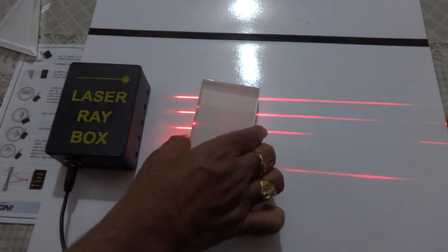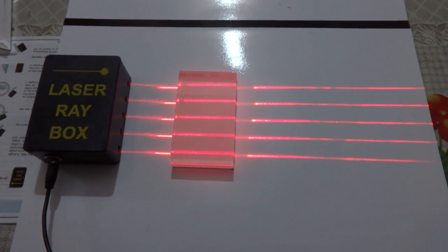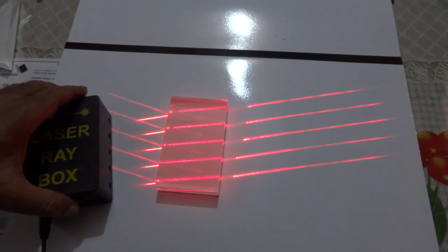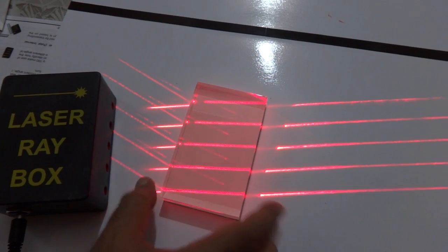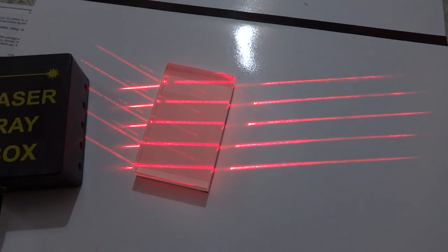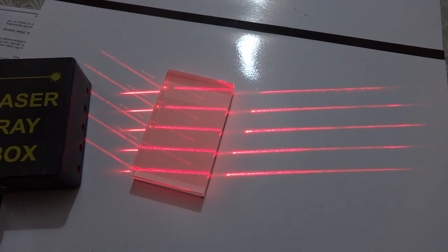Now, if you observe the refraction through a glass slab. You can see the bending of light in the glass slab. So, this bending is caused just because of refraction. Because here, outside the glass, the medium is air and inside the glass, the medium is glass.